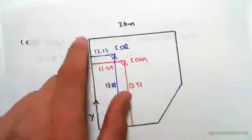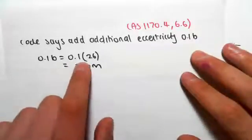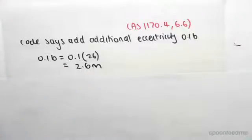We're just going to be adding on 0.1b, so 0.1 of 26 is 2.6 meters, and we just need to add that on to the eccentricity. The reason the code does this is it makes it a worse case so that we have more torsion, resulting in a higher design load.